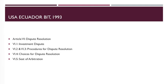Article 6.4 provides that the US and Ecuador consent to the submission of any investment dispute for settlement by binding arbitration in accordance with the choice specified in the written consent of the national or company under paragraph 3. So it is a consent made even before the dispute arises. The treaty states that such consent shall satisfy the requirement of written consent under the ICSID rules and under the New York Convention.